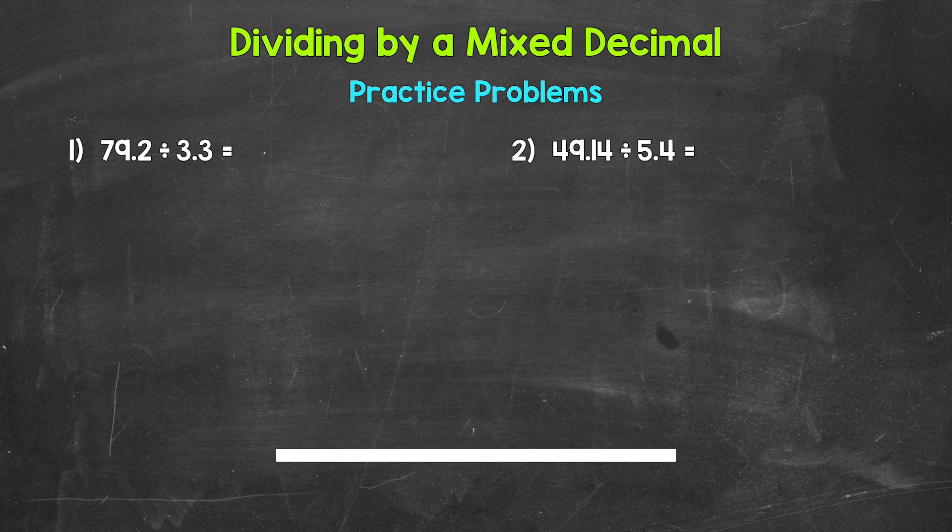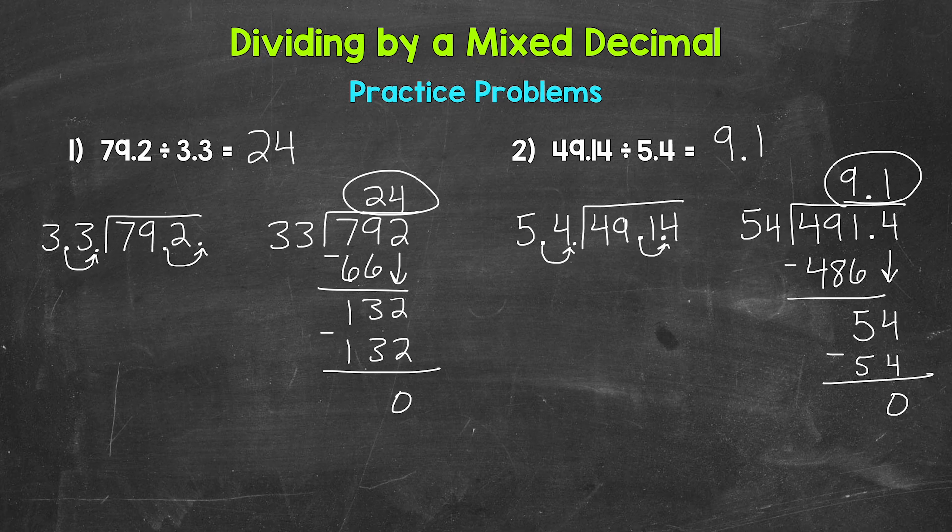Okay, so that was four minutes. Let's go over the answers. For number one: 79 and 2 tenths divided by 3 and 3 tenths equals 24. For number two: 49 and 4 tenths divided by 5 and 4 tenths equals 9 and 1 tenth.